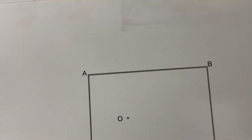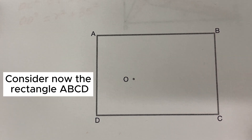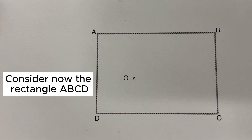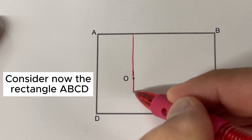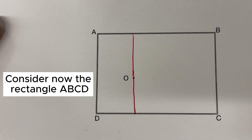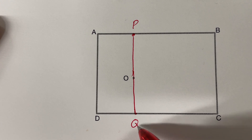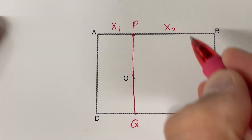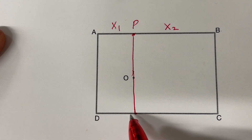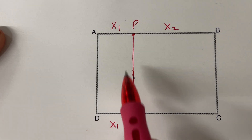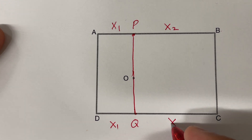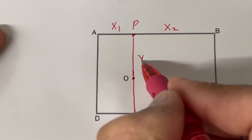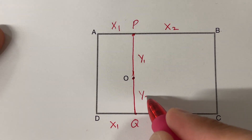Now let's consider the rectangle ABCD with O as the center of the circle. I'll draw a horizontal line through O, meeting the sides at point P and point Q. Let the length AP equal x1 and PB equal x2. The opposite lengths will also be x1 and x2 respectively. Let OP equal y1 and OQ equal y2.